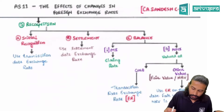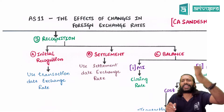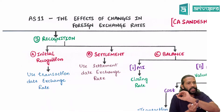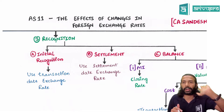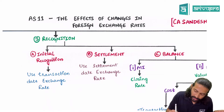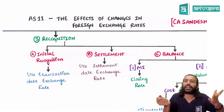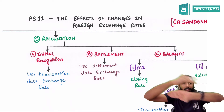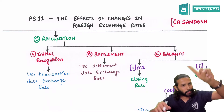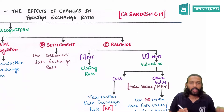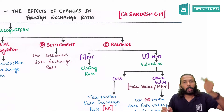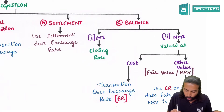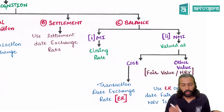Next, recognition. All foreign currency transactions are initially recorded at the transaction date exchange rate, also called the transaction date spot rate. Settlement will happen at the settlement date exchange rate. In between initial recognition and settlement, if there is any foreign currency balance to be shown in the balance sheet, you need to check whether that foreign currency item is a monetary item or a non-monetary item.